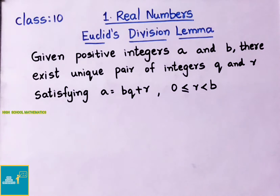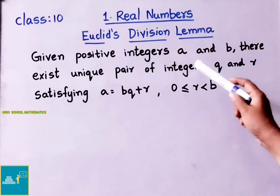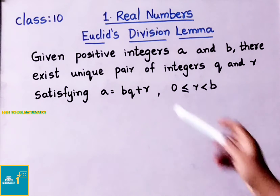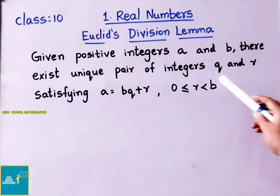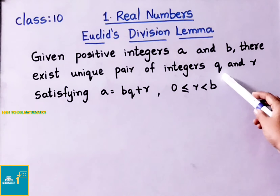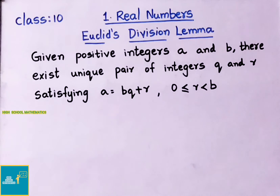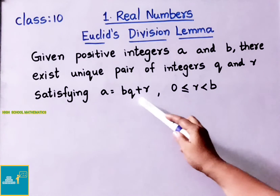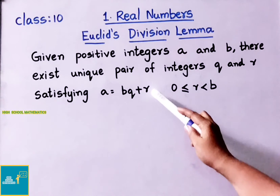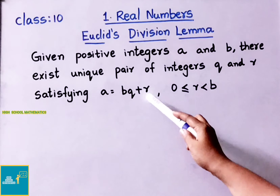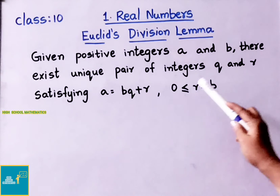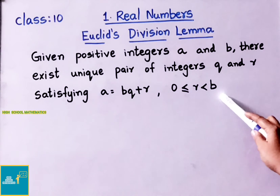That is, we have taken any two positive integers — there will be two unique integers Q and R. We must satisfy the rule A equals BQ plus R, where R value is greater than or equal to 0 and less than B.